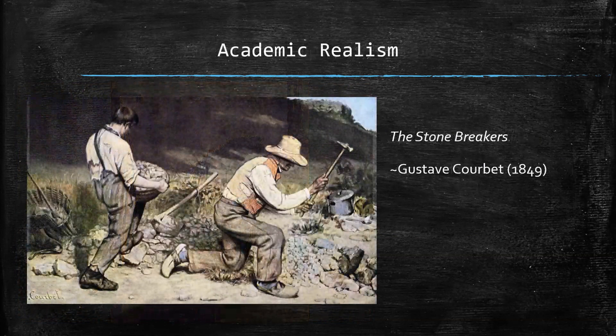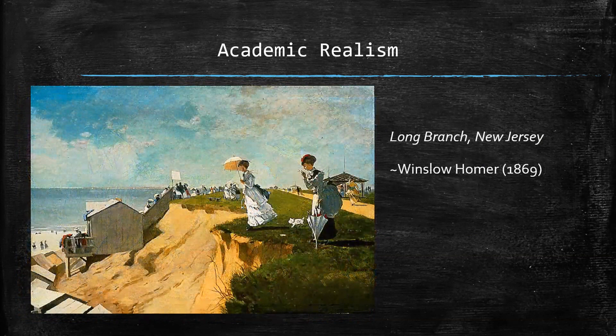This would be an example of American Realism. This is The Stonebreakers by Gustave Courbet, and as you can see, there's a heavy emphasis on being very true to real life — very realistic colors, shades, realistic figures, and realistic poses. This would be the kind of thing you would see on advertisements at that time. Here we have another example, Long Branch, New Jersey by Winslow Homer. Once again, we have upper-class individuals doing upper-class activities.